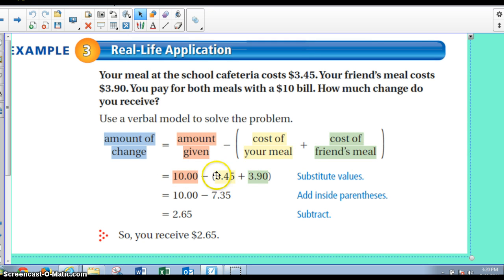Then write the problem with the numbers. You don't know the amount of change, so you can't do anything there. Your amount that you gave them was $10. Then you subtracted the total of these two. But this is your original equation. These are the verbal words. These are the actual numbers. Then step two is $10 minus $7.35, which is the total of that. And then it equals $2.65. So you receive $2.65.